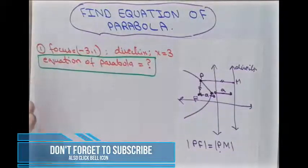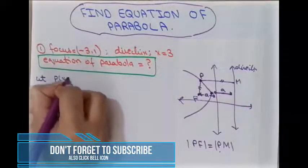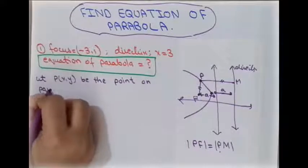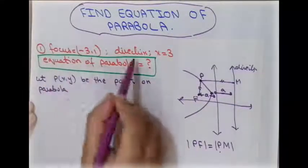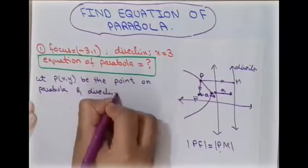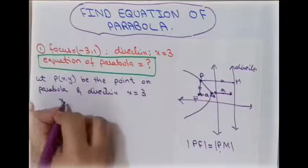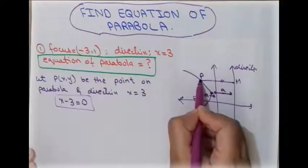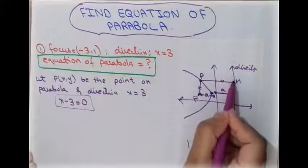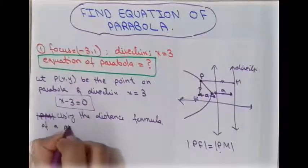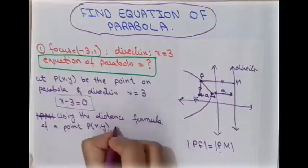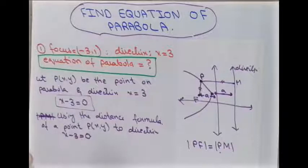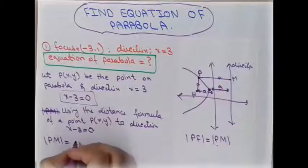Here is a focus and here is a directrix line. For the solution, let's suppose P having coordinates (x, y) is a point on the parabola. The directrix is x = 3, which we write as x − 3 = 0. If we draw a perpendicular line from point P to this directrix line at point M, we need to find PM — the distance from point P(x, y) to the directrix line x − 3 = 0.